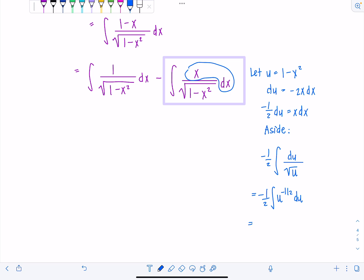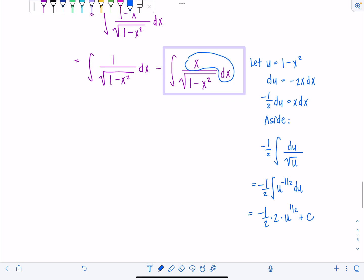divide by the new exponent. I'm going to have negative one half. This is going to be u to the positive one half. Dividing by one half is the same as multiplying by two. And then I have my plus c.